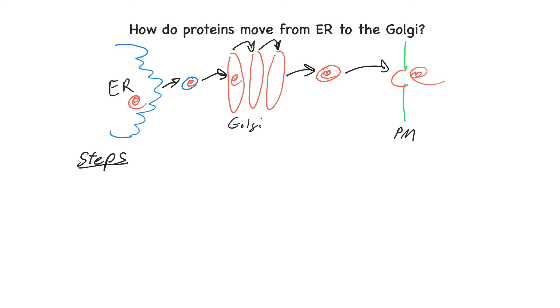So the first step that we're going to start with is we have the ER membrane, so it's a lipid bilayer, and it buds, begins to bud off a vesicle. So this is the lumen, this is the cytosolic side, and that vesicle, the budding, is driven by assembly of a set of coat proteins.